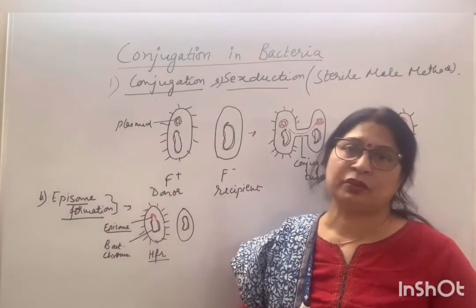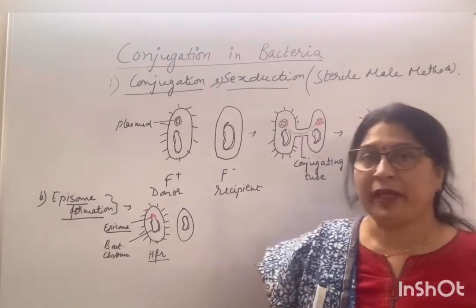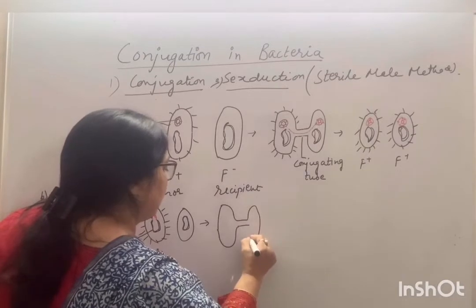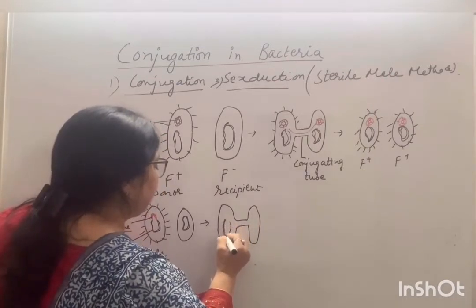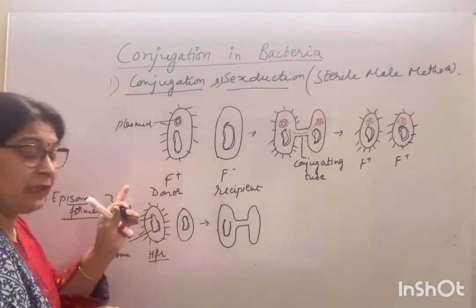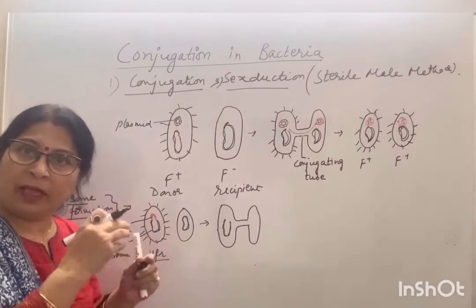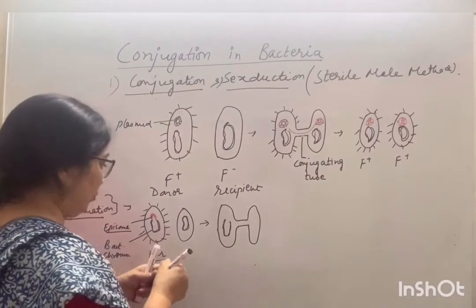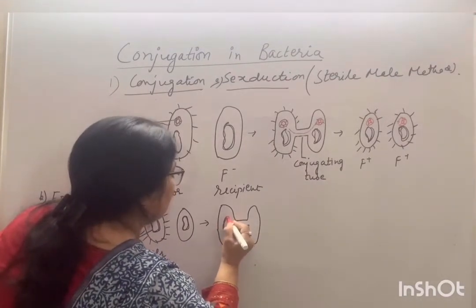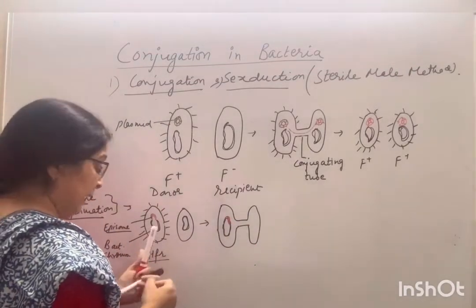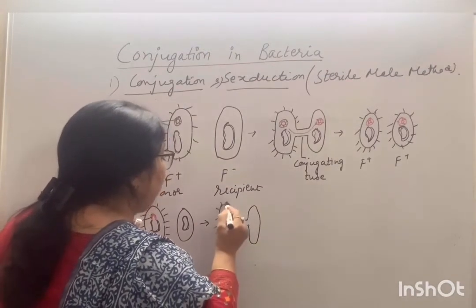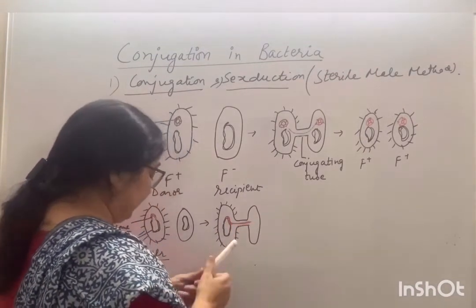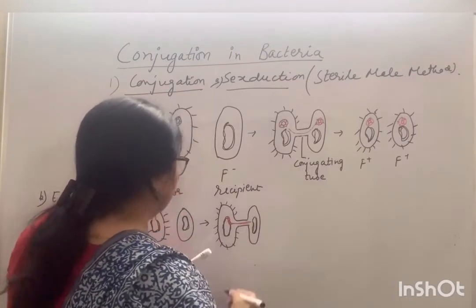When the HFR cell forms a conjugating tube with a recipient cell, the epizome — being longer than the plasmid — begins replication. Some of the bacterial chromosome enters into the recipient bacterial cell. This is the HFR mechanism.